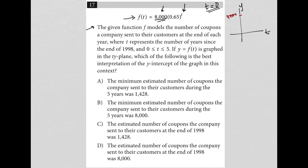So what does that represent? That represents how many coupons were sent out at the end of 1998. There have been no years since the end of 1998, so it's t equals 0.